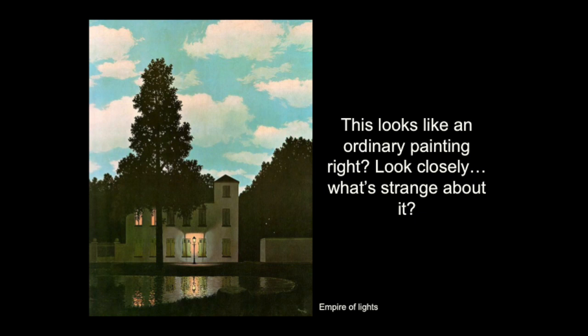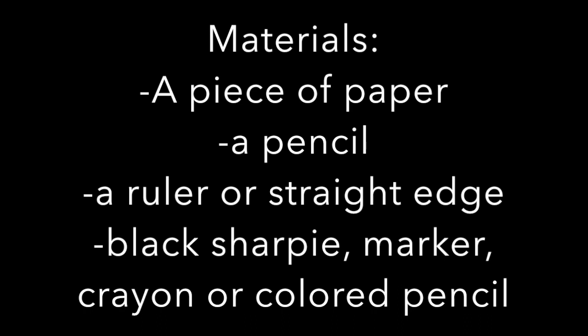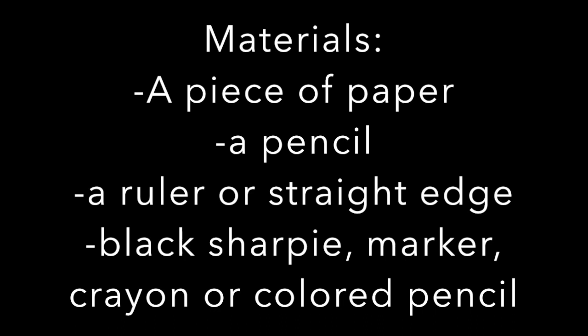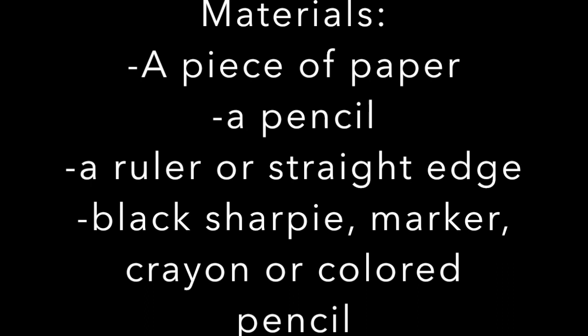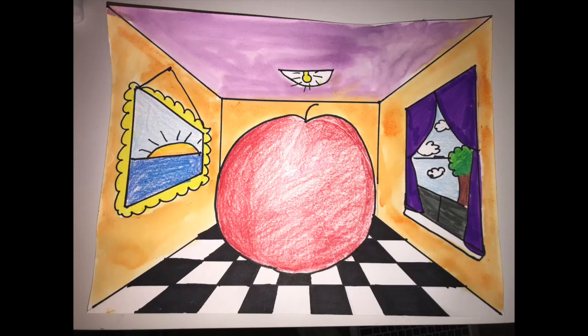You're going to pause me now and run to get a piece of paper, a pencil, a ruler or a straight edge — something with a straight edge so you can use it as a ruler — a black Sharpie, marker, or crayon, or colored pencil, anything you can outline your drawing with. This is what we're going to be making: a room that has something really large in it that wouldn't normally be that way. Think of something important to you, or something you see around the house, that you'd want to put in the middle of this room.